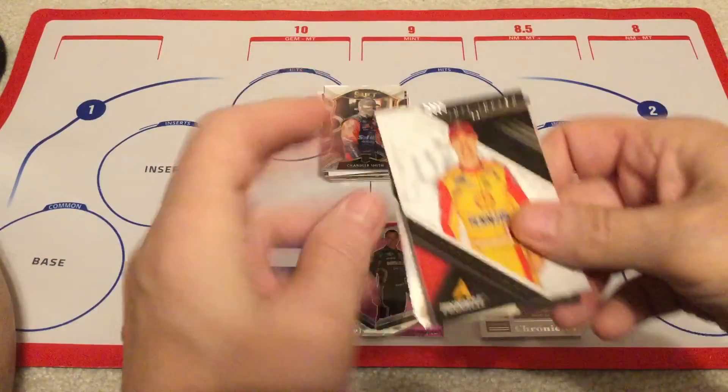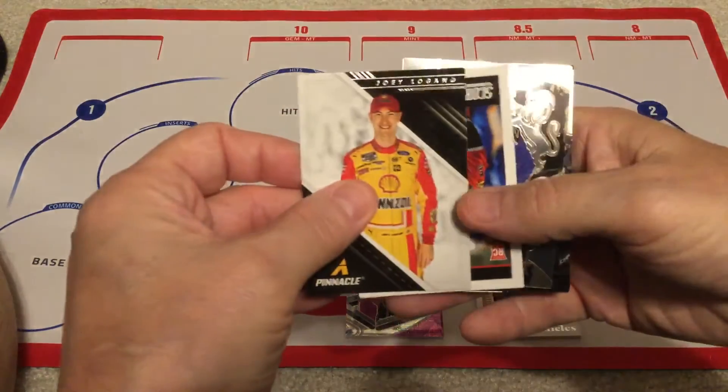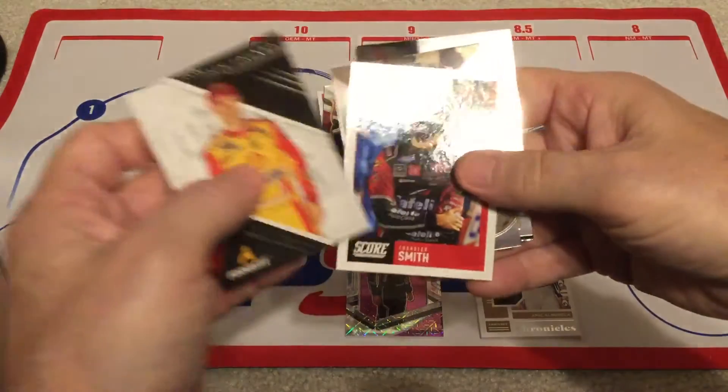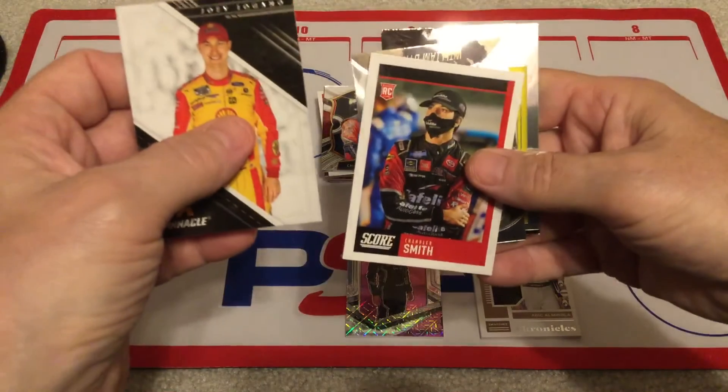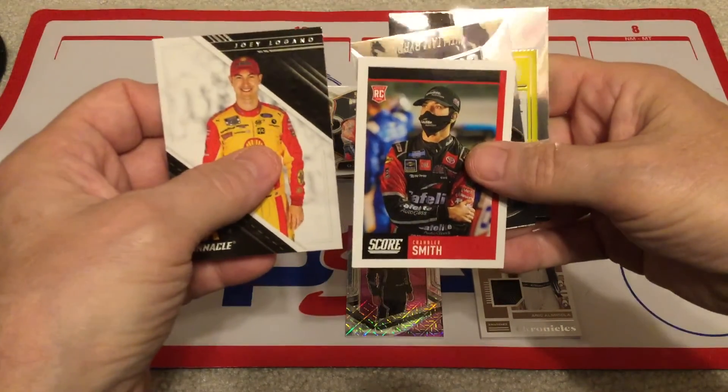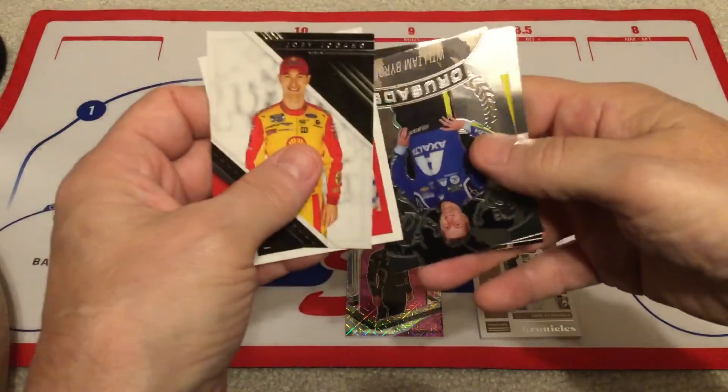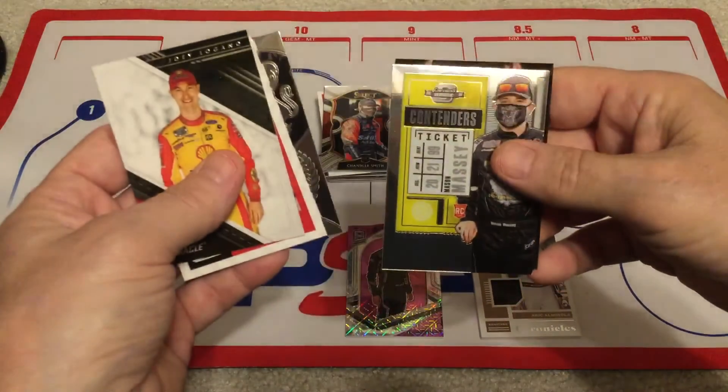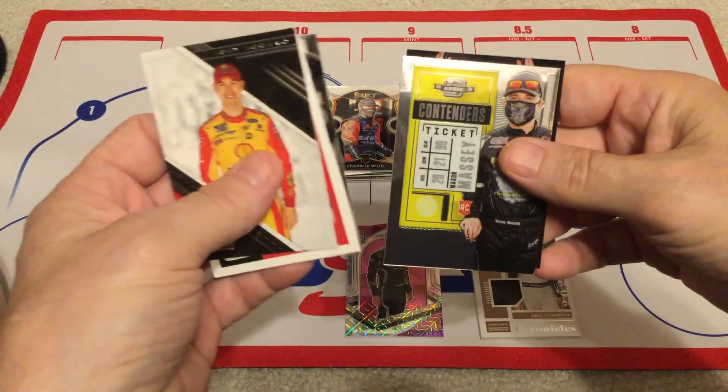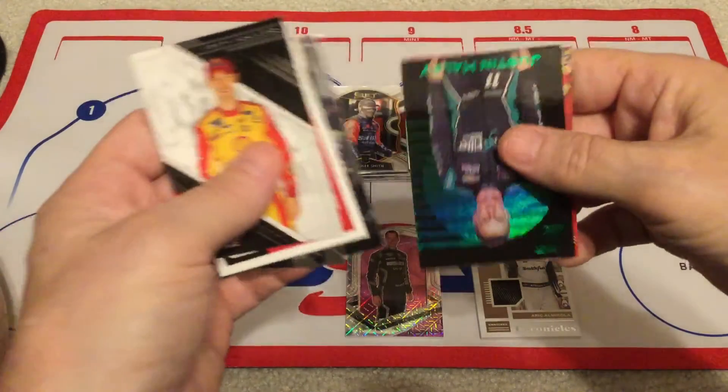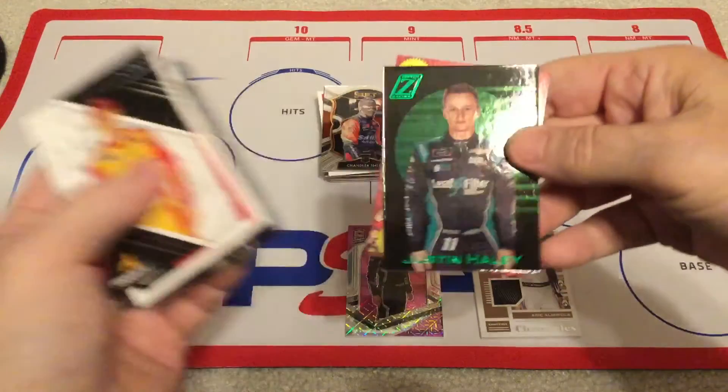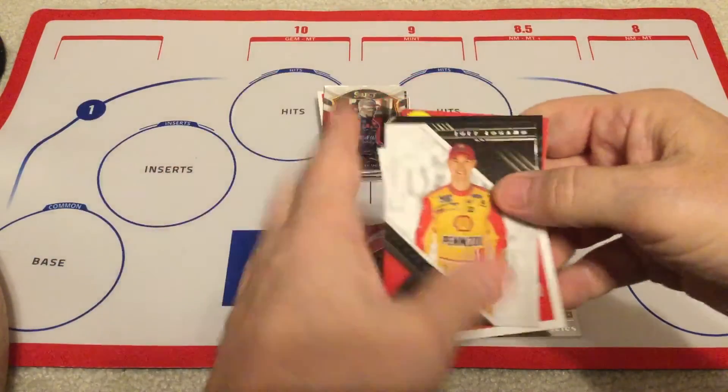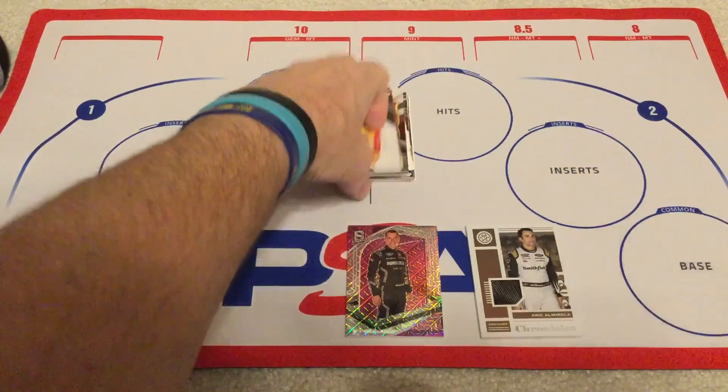All right, there's a Pinnacle Joey Logano. And there's Chandler Smith in Score, William Byron in Crusade, Mason Massey in Contenders. And a green Justin Haley who's going full-time. So there you have it, check you later hobby peeps.